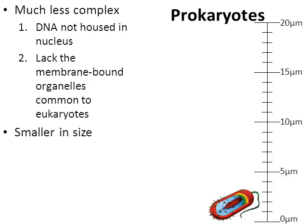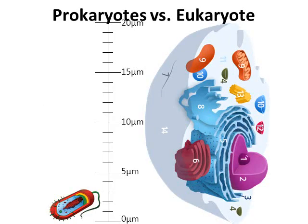Prokaryotes are much, much smaller in size. If you remember that previous picture of the eukaryotic cell that was about 20 micrometers, this one is only about three. When we put the cells side by side with the scale, it's really striking to see just how much larger eukaryotic cells are versus prokaryotic cells.